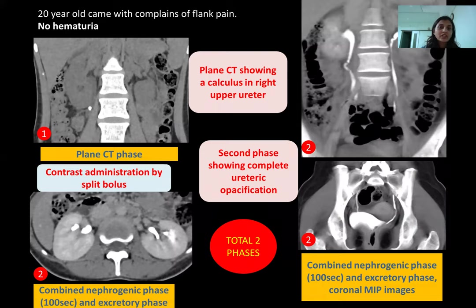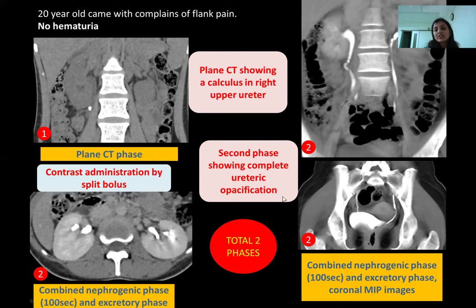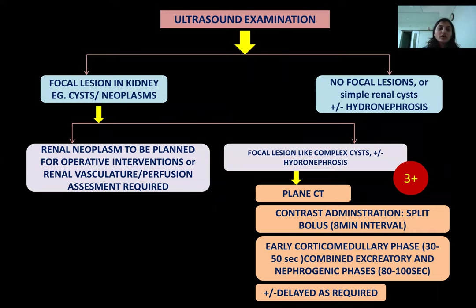A representative case: a 20-year-old patient with complaint of flank pain. Plain CT revealed a ureteric calculus in the right ureter. Contrast was administered by split bolus, and in the second phase there was uniform enhancement of renal parenchyma as well as complete opacification of both ureters. Hence, a total of only 2 phases were required for complete assessment. In patients with focal lesions such as complex cysts, a corticomedullary phase was also done apart from the combined nephrogenic and excretory phase, requiring a total of 3 phases.